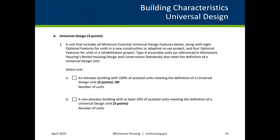The first selection criterion under the Building Characteristics Selection category is Universal Design. Applicants agree that a certain percentage of units will meet universal design requirements based on the building type: 100% for elevator buildings and 10% for non-elevator buildings. Universal Design includes minimum and optional features.